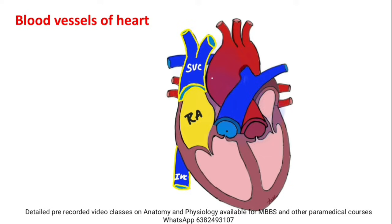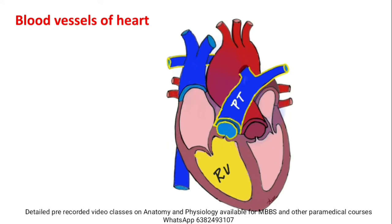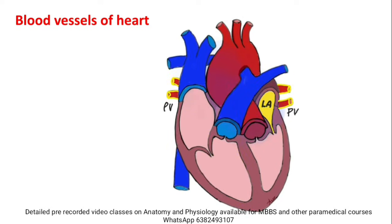To summarize the connections: the right atrium is connected to the superior vena cava and inferior vena cava. The right ventricle is connected to the pulmonary trunk. The left atrium is connected to the pulmonary veins.